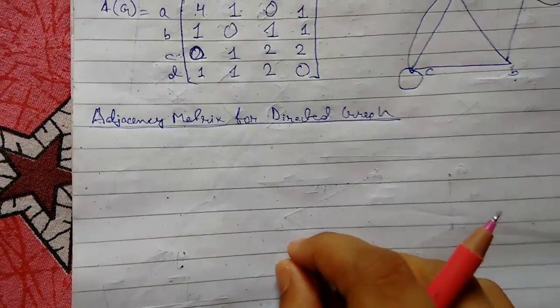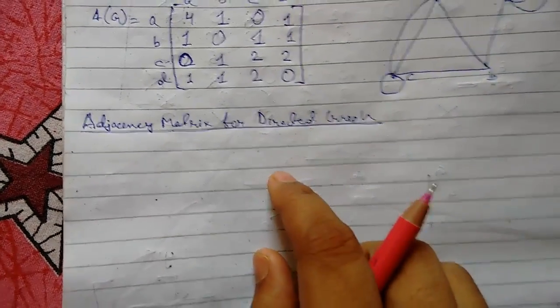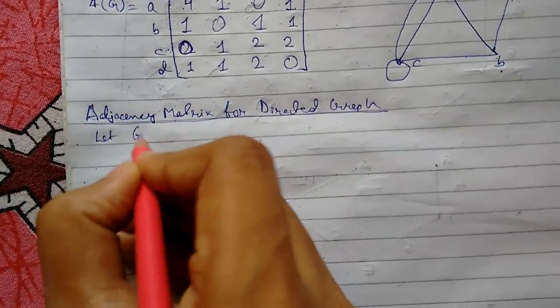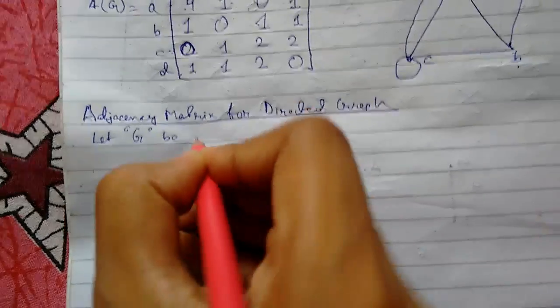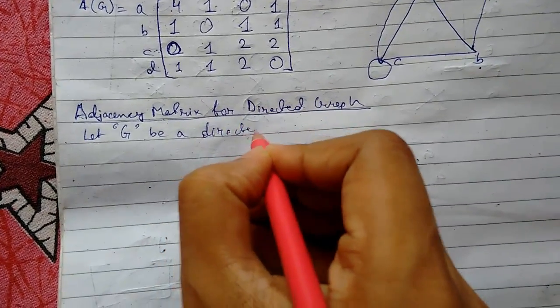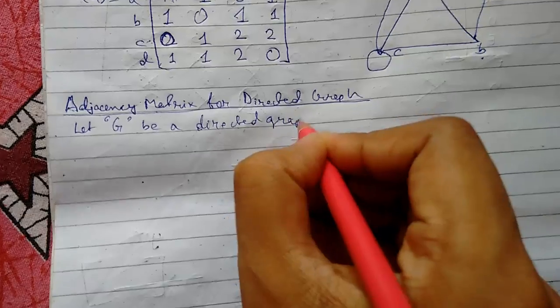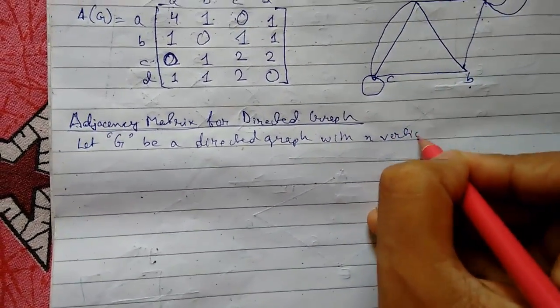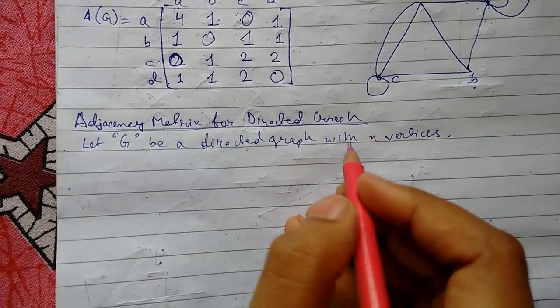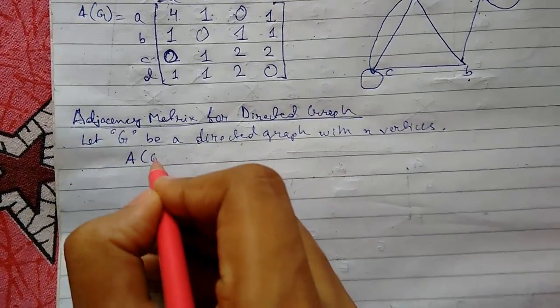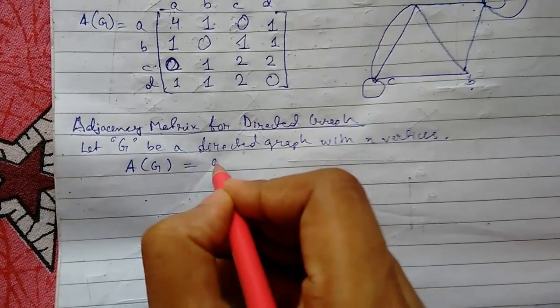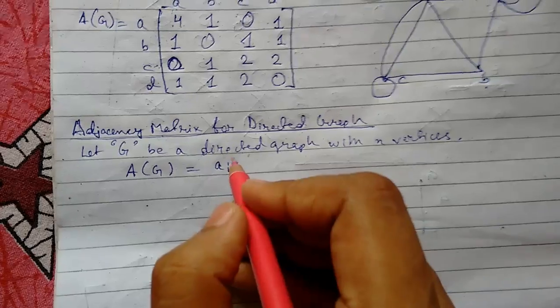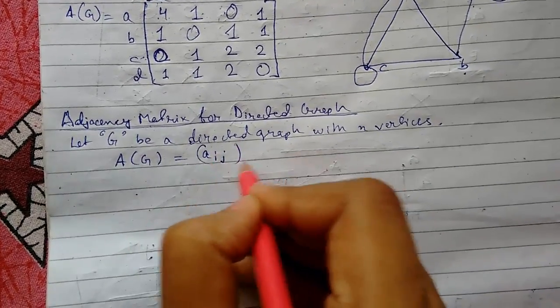Welcome back guys, today we will be continuing adjacency matrix. Now today it is for a directed graph. Let G be a directed graph with n vertices. So by adjacency matrix, our directed graph will be defined as A(G) = (aij), and that will be an order of n cross n.